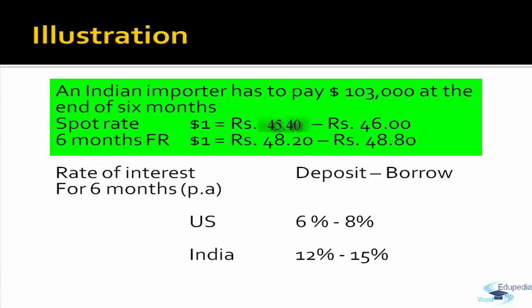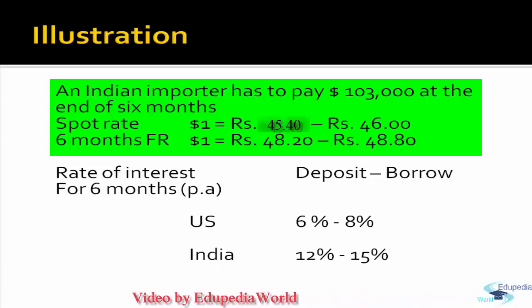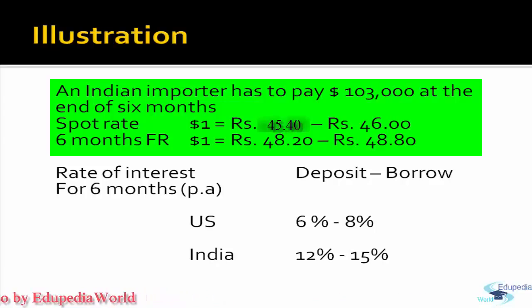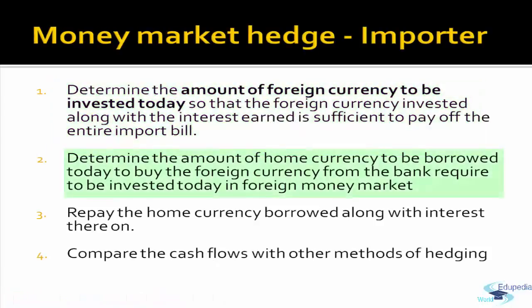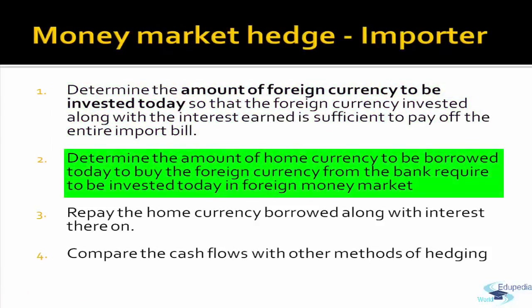The first step is to compute how much amount has to be invested in the US market, since the payment has to be made in dollars. You determine the amount to invest so that it grows to USD 1,03,000 after six months. The next step is to determine the home currency to be borrowed today to buy the foreign currency from the bank. That borrowed amount — plus interest — is then repaid, and you compare the total cash flows with other methods of hedging.